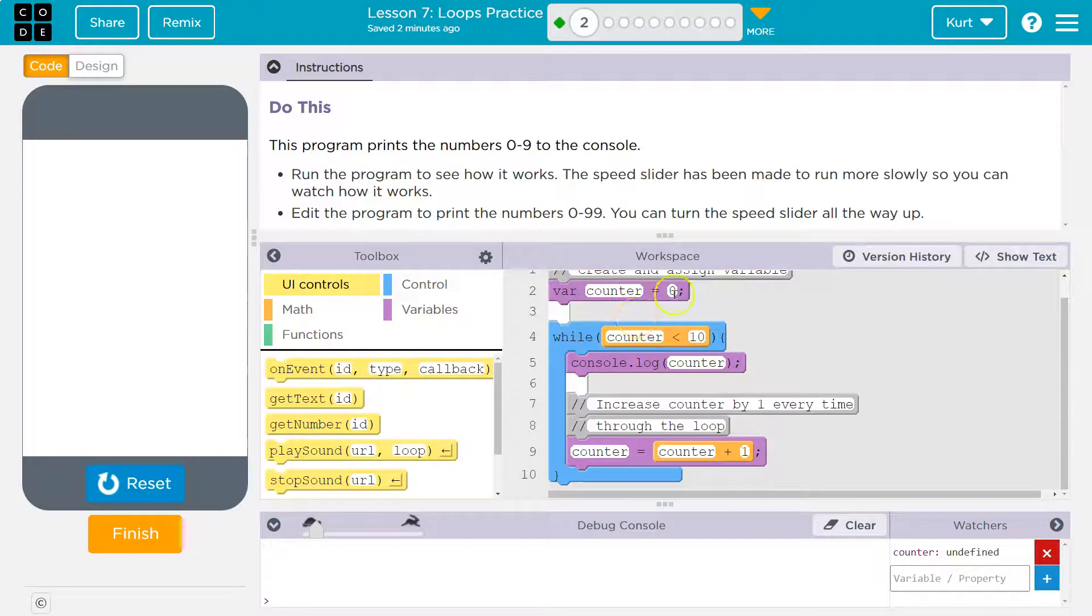So counter will start at zero, and then, yep, counter is equal to zero. It hits this loop and says, okay, zero is less than 10. Log counter. Yep, it's zero. Add one to counter. So now counter would equal one.